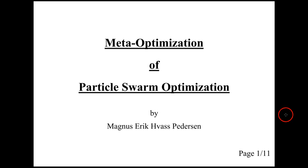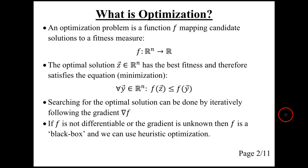Hello, my name is Magnus Petersen. This talk is about meta-optimization of particle swarm optimization. An optimization problem is a function f mapping from a search space or domain to a codomain, in this case real-valued. The optimal solution is one that satisfies this equation, which basically means that the fitness of the optimal solution is better than the fitness of all other potential solutions in the search space.